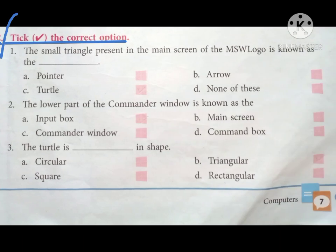Question C: Tick the correct option. Number one: The small triangle present in the main screen of the MSW Logo is known as the dash. Options are: A. Pointer, B. Arrow, C. Turtle, and D. None of these. It is very easy. We know that the small triangle which is present on the MSW Logo screen is known as turtle, so we will tick on number C.